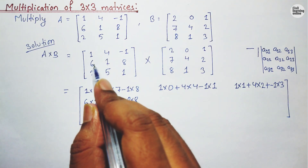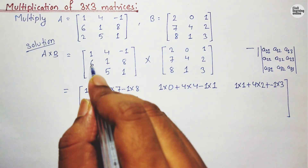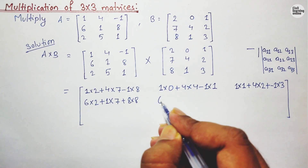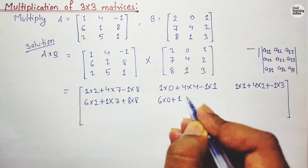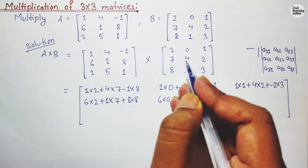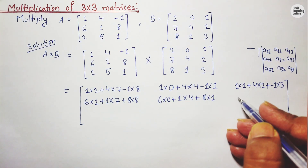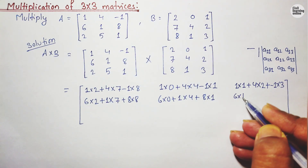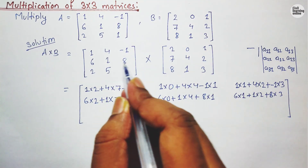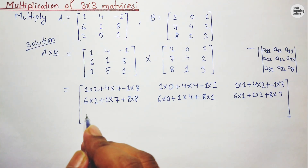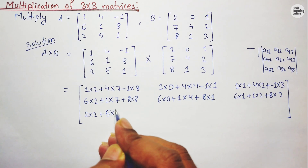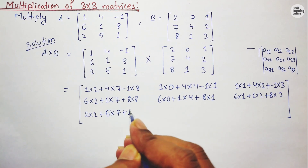Now for element a(2,2): we multiply the second row with the second column, so 6×0 plus 1×4 plus 8×1. Then for a(2,3): 6×1 plus 1×2 plus 8×3. For the third row first element: 2×2 plus 5×7 plus 1×8.